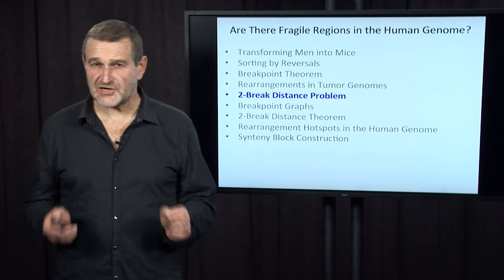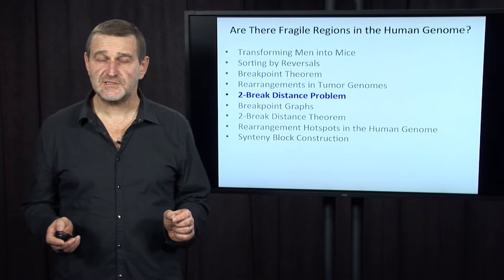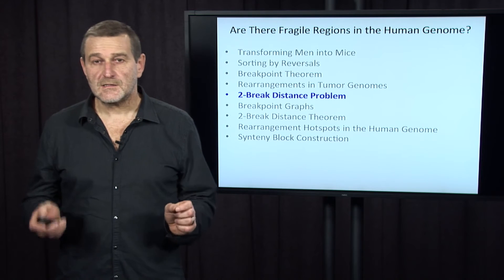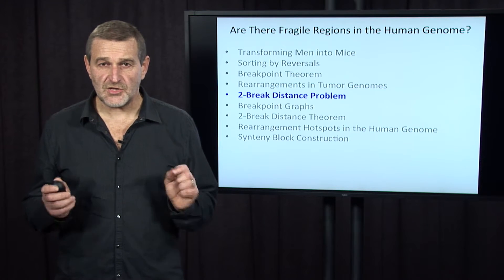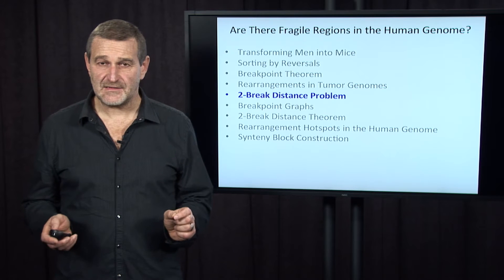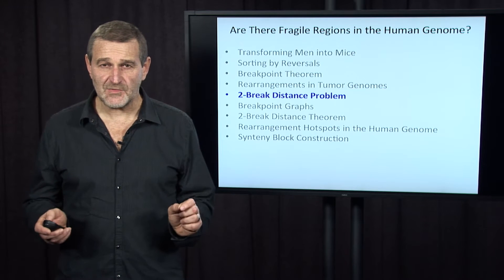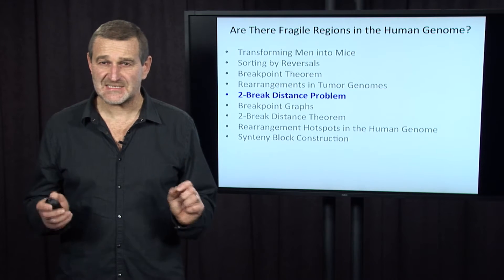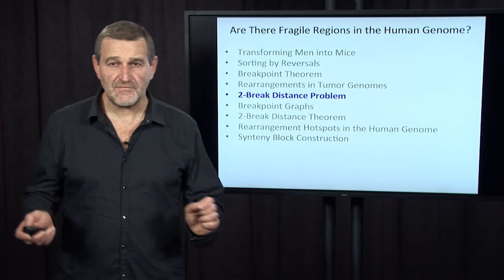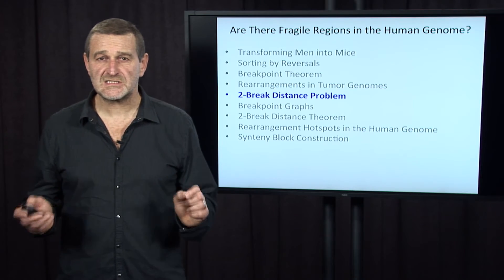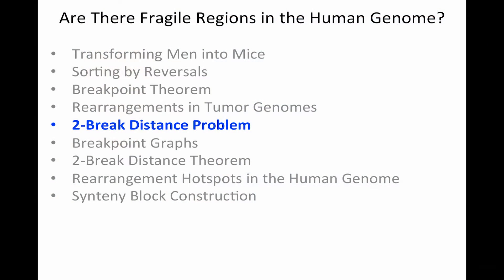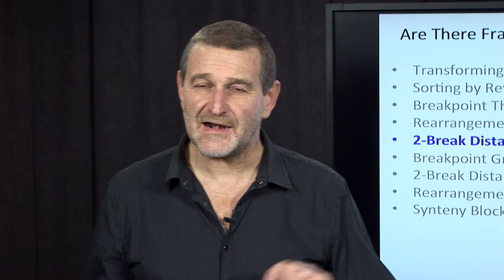We'll now make a strange and counterintuitive step. We know that human chromosomes are linear, but we want to think about them as circular, cyclic chromosomes. Why would we do this? Why would we distort the biological reality? The only reason is that it will make our algorithmic problem much simpler, while actually hardly affecting our biological conclusion.